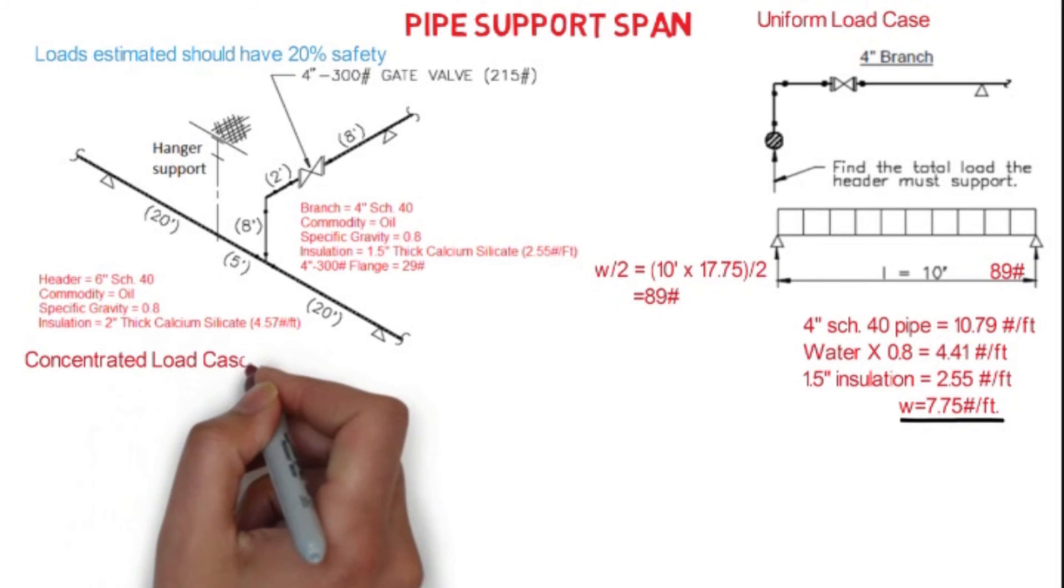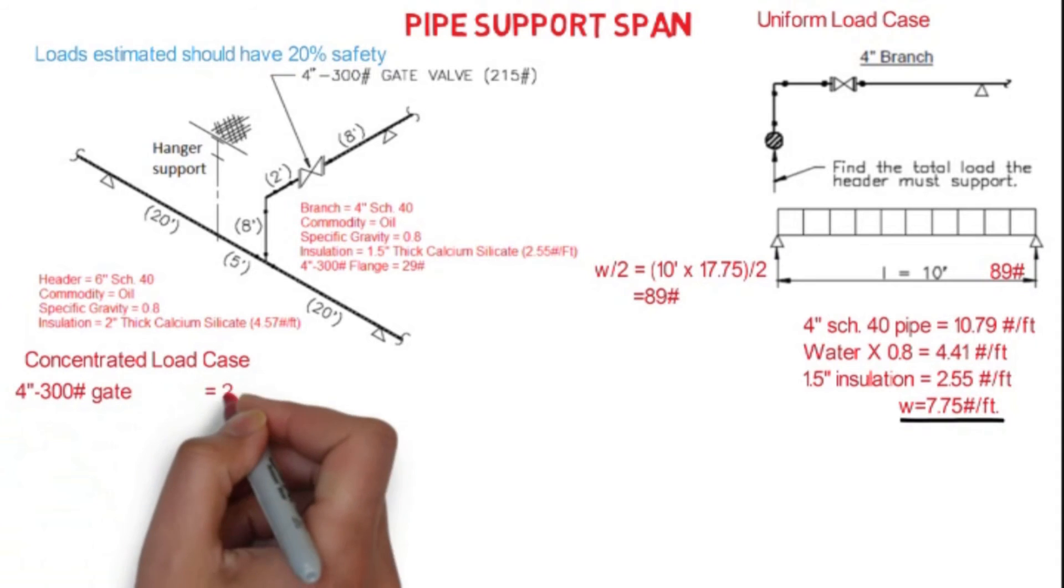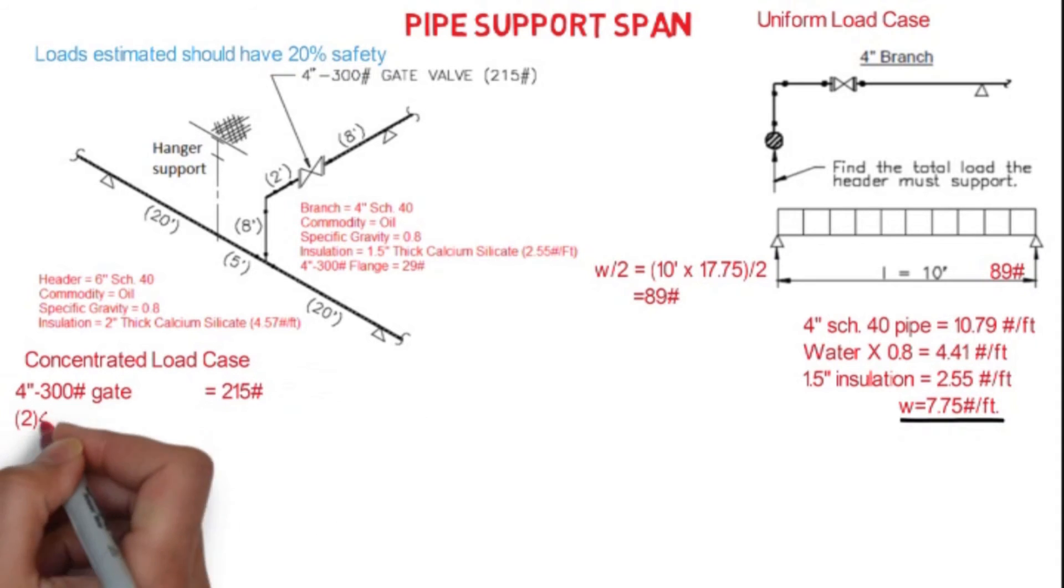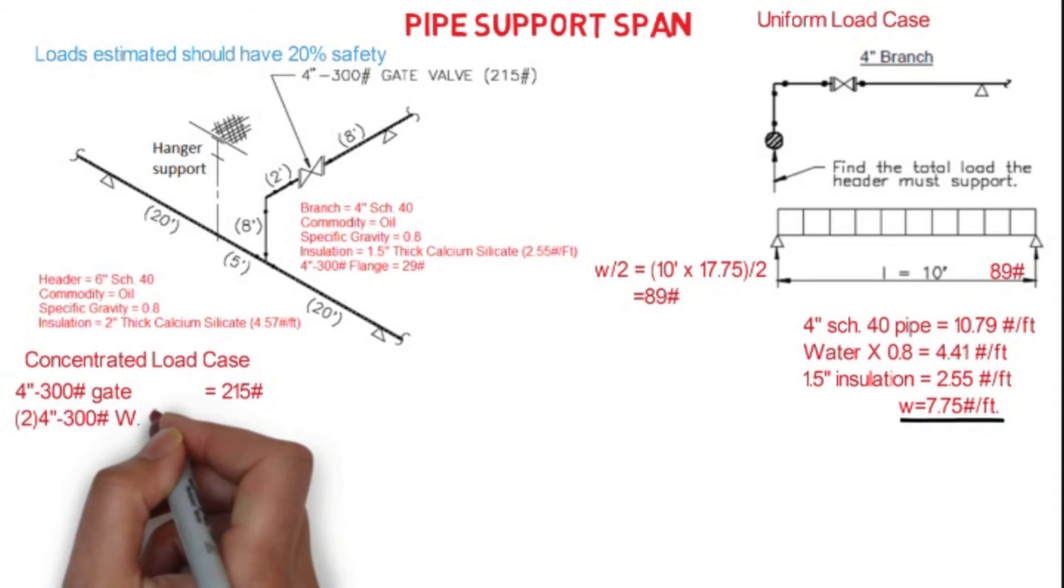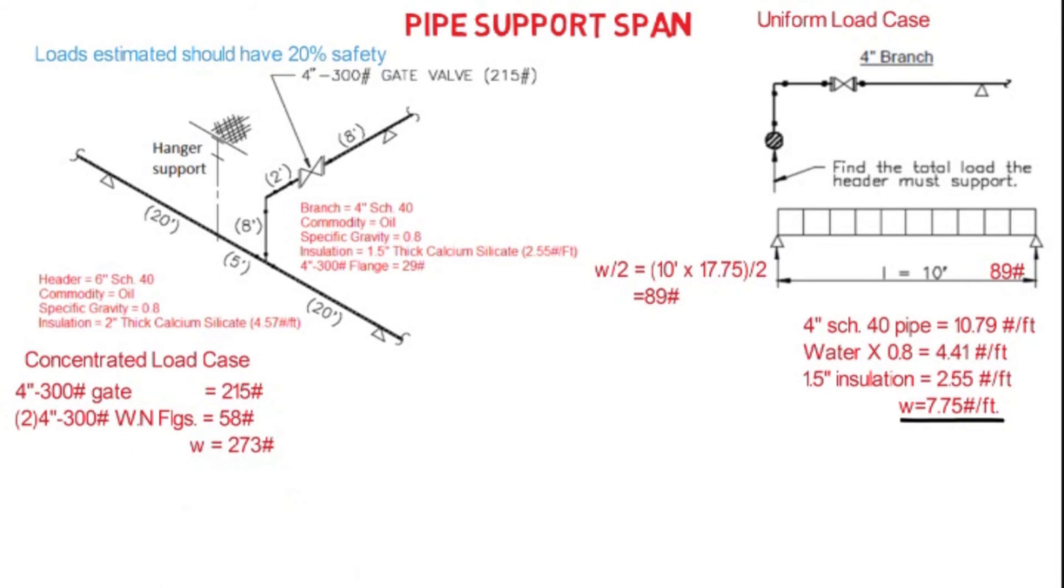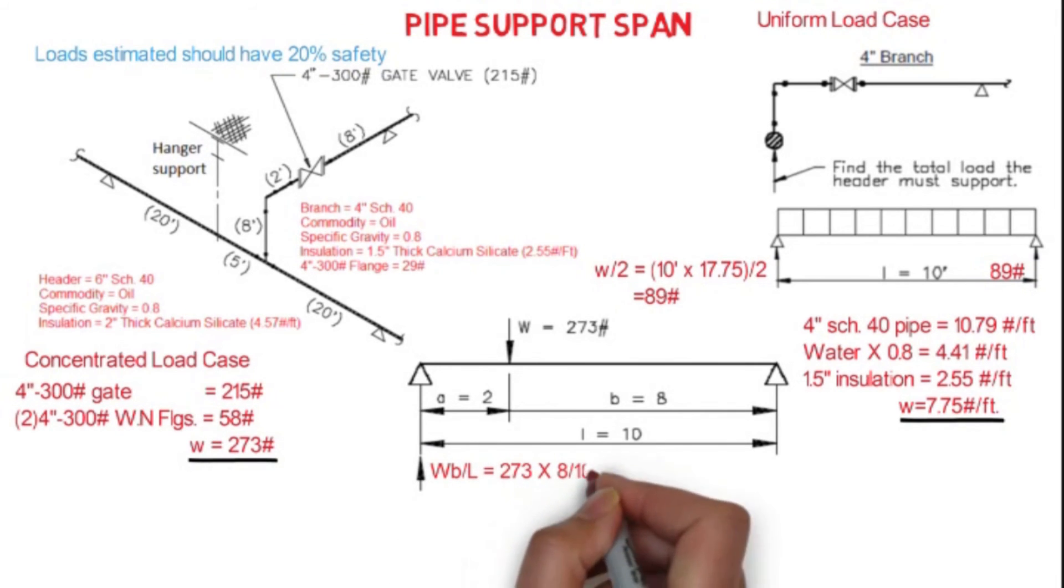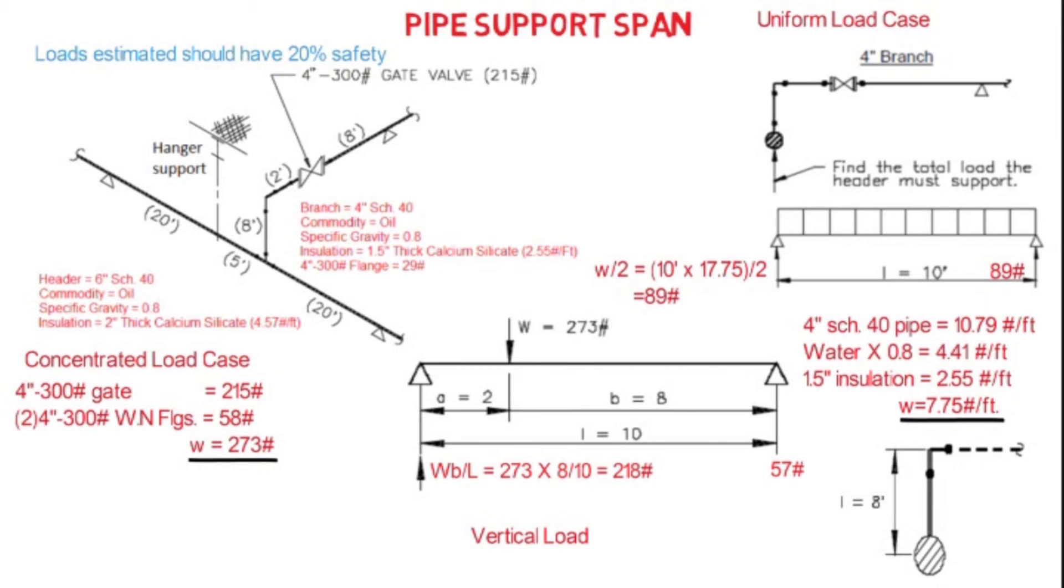Similarly, we will calculate for the concentrated load where we have 4-inch 300 pound gate valve which has 215 pound weight, and this valve has two flanges which weigh around 58 pounds, so we have to add these values which comes around 273 pounds. Here we are calculating the load at the header end only, so that's why we will multiply the span by the weight per foot, so it will come around 218 pounds.